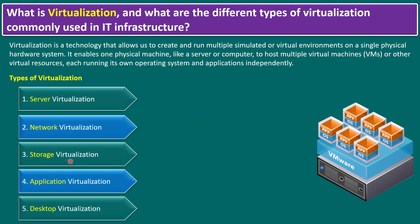For storage virtualization, normally we use physical storages like local storage, Direct-Attached Storage (DAS), Storage Area Network (SAN), or iSCSI-based systems. With storage virtualization, we don't need physical storage boxes. We can use normal servers with multiple disks — grouping all those disks into one storage pool using storage virtualization technology. One example is VMware vSAN, also called Software-Defined Storage.